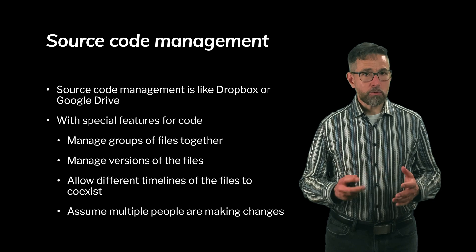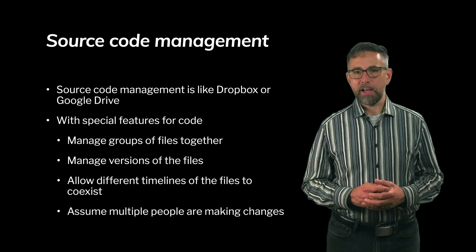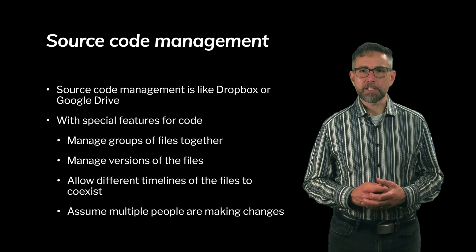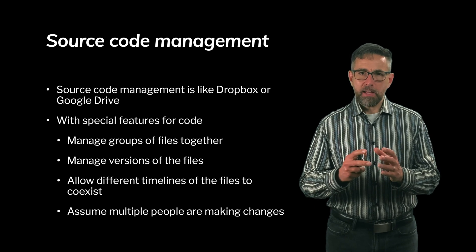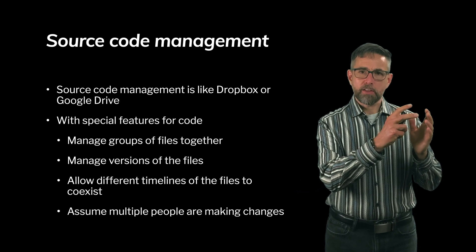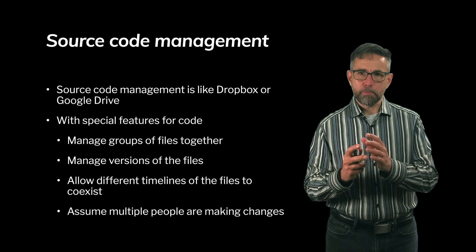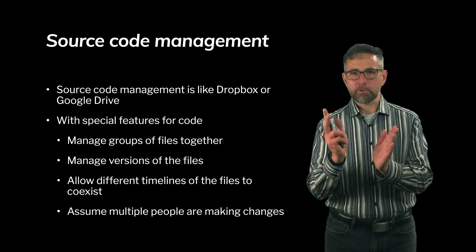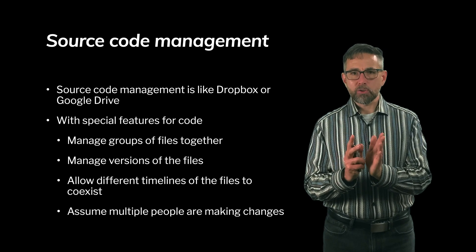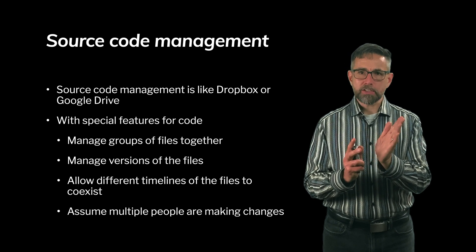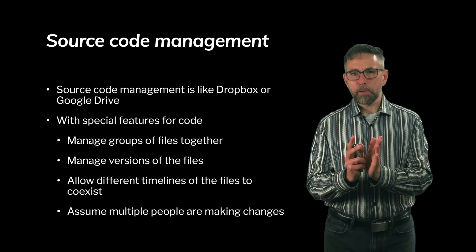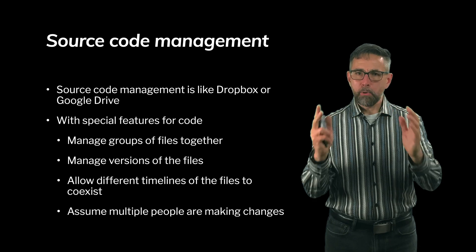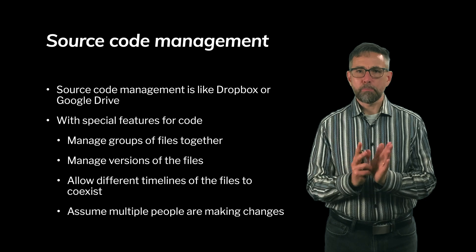They also allow for different timelines of files to coexist — timelines in the way that a Marvel movie has different timelines when there's time travel. If a group of files starts changing in one direction and the same group gets changed by another person in a different direction, that's what I'm calling two different timelines. More formally, they're called branches in source code management. One developer will create a branch to add a feature, another developer will create a different branch to add a different feature, and at some point they'll bring them back together. It's called branching and merging.